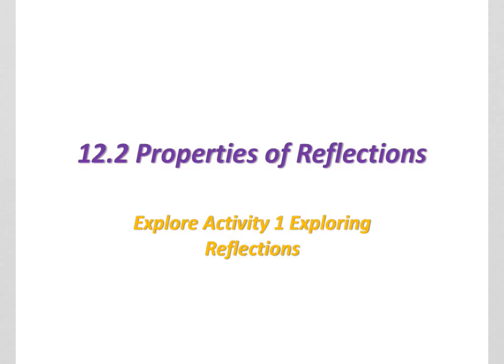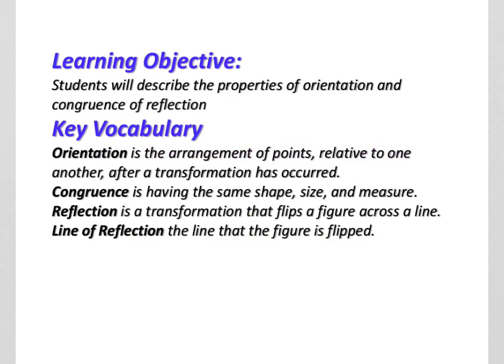Let's take a look at explore activity one in the book and see what we have to do to get an understanding of these properties of reflection. Your learning objective is you will describe the properties of orientation and congruency of reflection. So two words that we definitely have to understand: orientation and congruency, and then a little later on we'll get into what is a line of reflection.